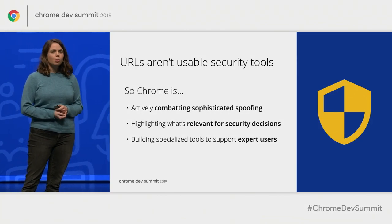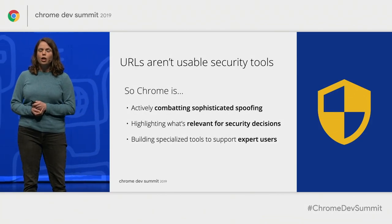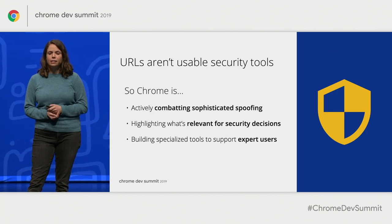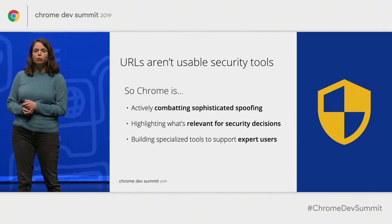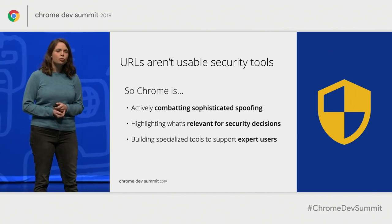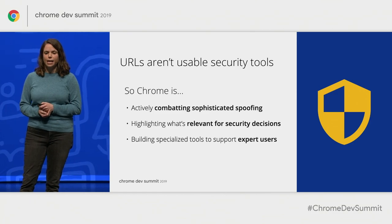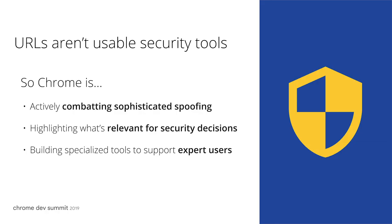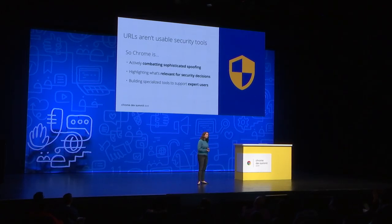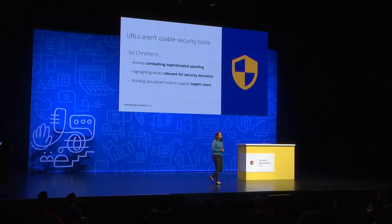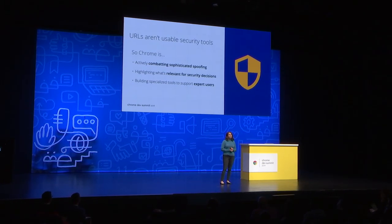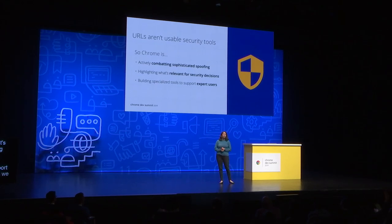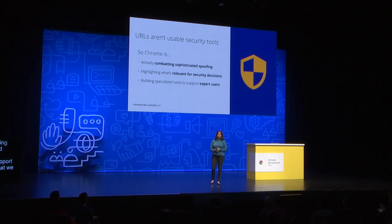We're approaching this problem from a few angles. First, we're actively combating sophisticated spoofing techniques that abuse URLs to create unusually deceptive attacks. Second, we're trying to draw people's attention to the information in URLs that's most relevant for making security decisions. And finally, we're building specialized tools to support expert use cases so that we can help make URLs better security tools without interfering with experts' workflows.